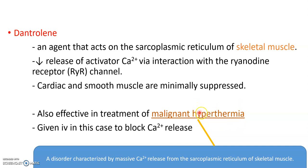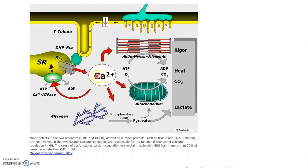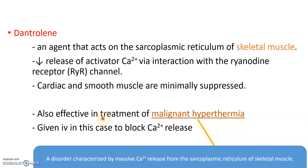Malignant hyperthermia is a condition where excessive calcium is released from the sarcoplasmic reticulum of the skeletal muscle. It is a medical emergency that requires supportive measures. It is rare but can be triggered by succinylcholine — a depolarizing neuromuscular blocker — and tubocurarine, a non-depolarizing neuromuscular blocker.